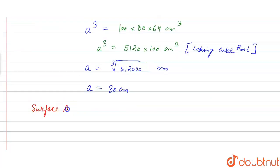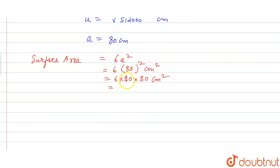So the surface area of cube is equal to 6a square, so 6 into 80 whole square centimeter square. So 6 into 80 is 480, into 80 is 38400 centimeter square.